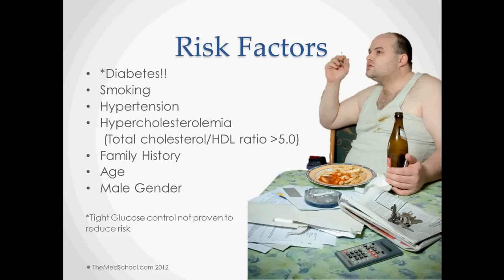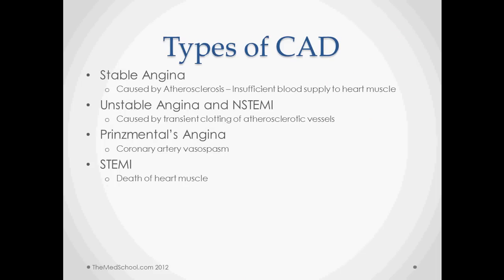The major variations of coronary artery disease include stable angina, caused by atherosclerosis narrowing the arteries and causing insufficient blood supply. At rest you usually won't have problems, but once the heart is exercised, it won't have enough blood to keep up with higher output. Unstable angina and NSTEMI are considered on a spectrum — caused by transient clotting of atherosclerotic vessels. In unstable angina without NSTEMI, a transient clot goes away before any damage to the heart muscle is sustained.